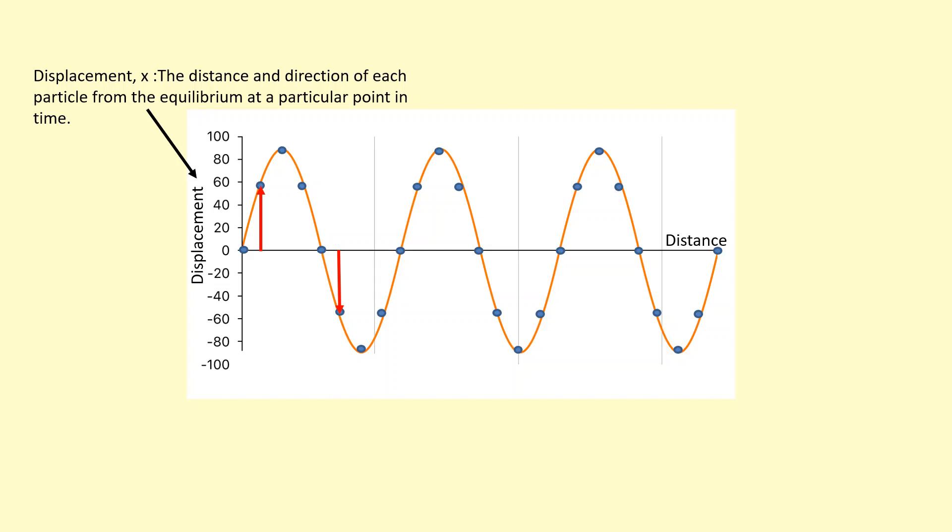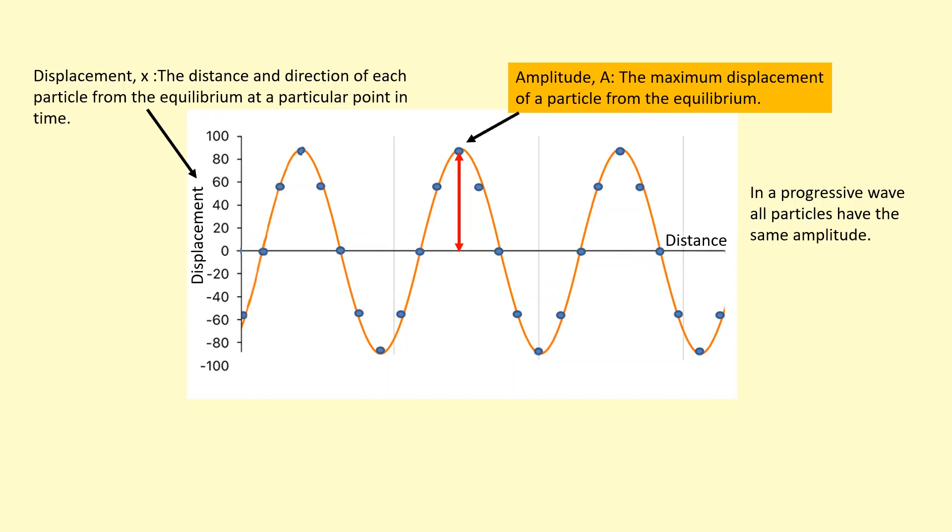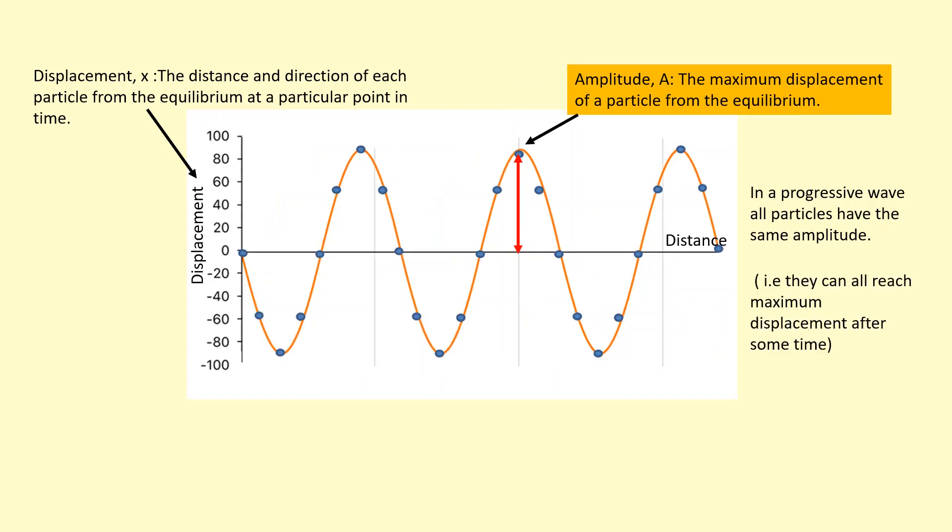Another important quantity to measure in waves is the amplitude. The amplitude is the maximum displacement of a particle from the equilibrium line. All particles in a progressive wave have the same amplitude. What do I mean by this? As the wave travels along like this, each particle has the opportunity to move away from the equilibrium line and occupy the maximum displacement.